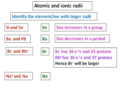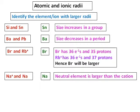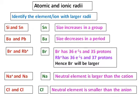Between sodium⁺ and sodium, sodium will be larger because a neutral element is always larger than its cation. Between Cl⁻ and Cl, Cl⁻ will be larger because anions are larger than the neutral element.